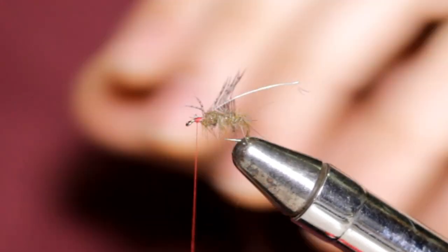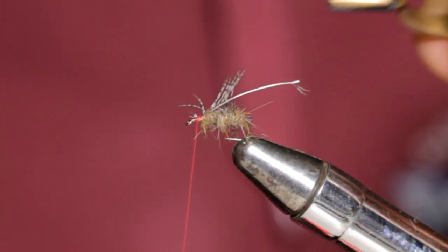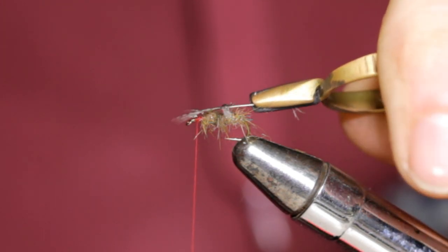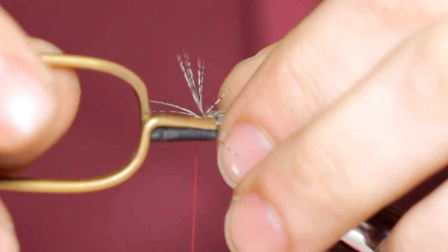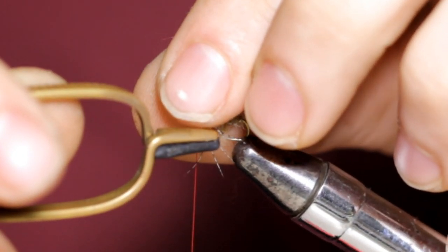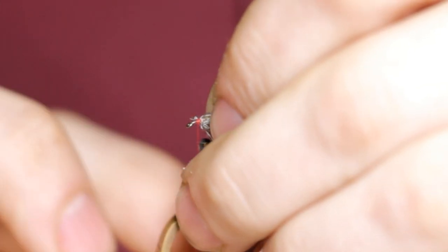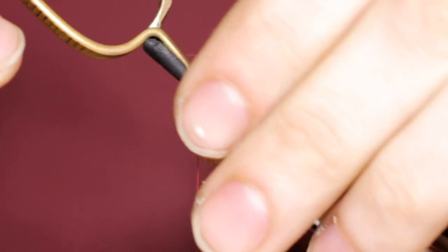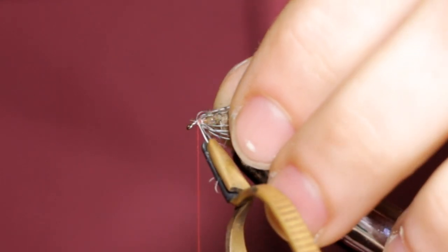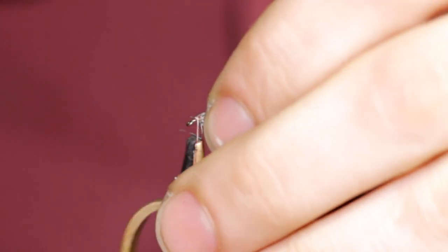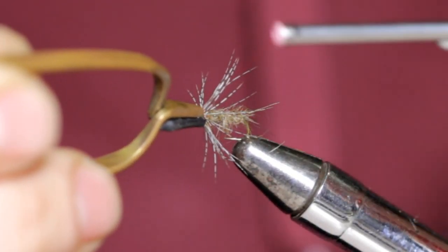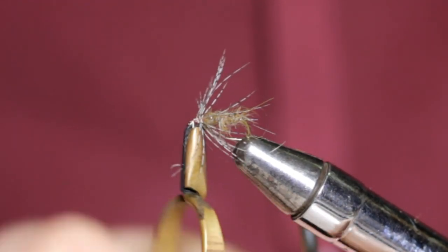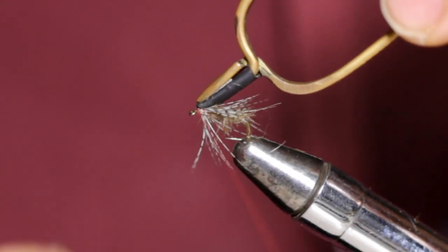I'm going to grab some hackle pliers, set this on the stem. I'm just going to pull back the fibers and take some touching turns. Keep pulling them back. I'm going to secure the stem with my tying thread. Just break that off.